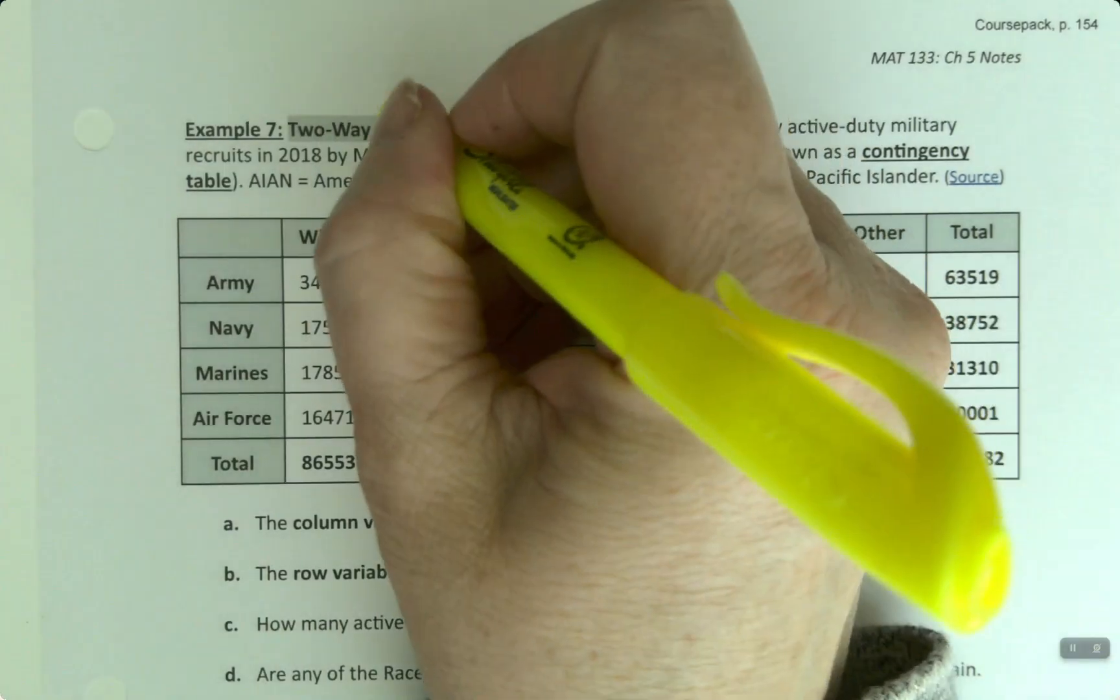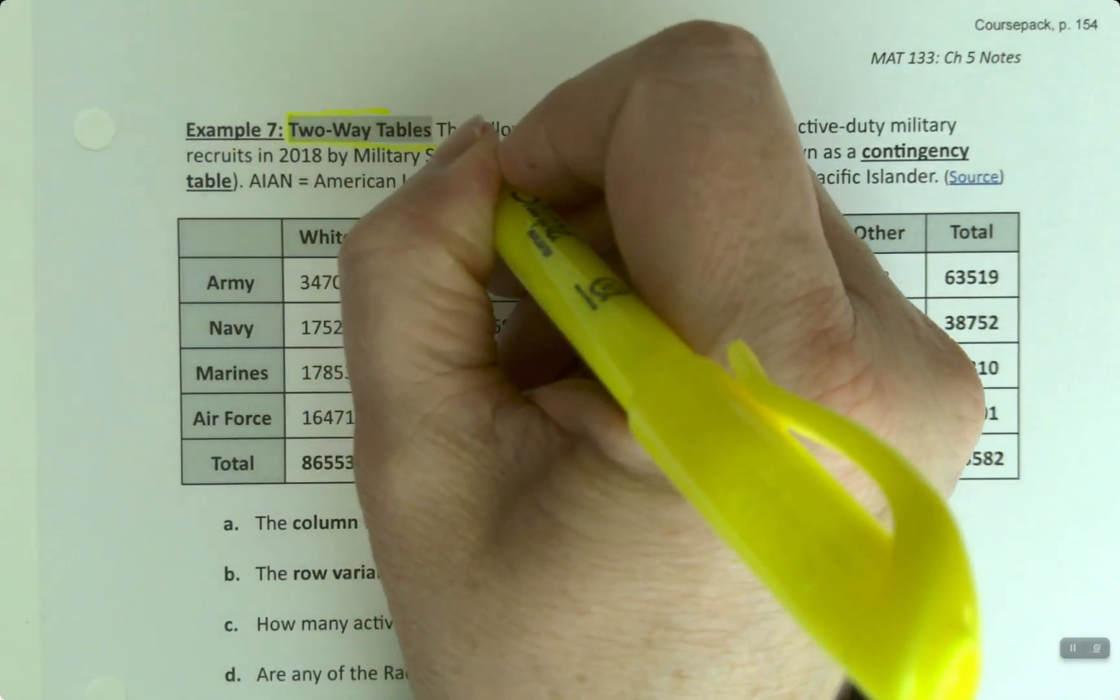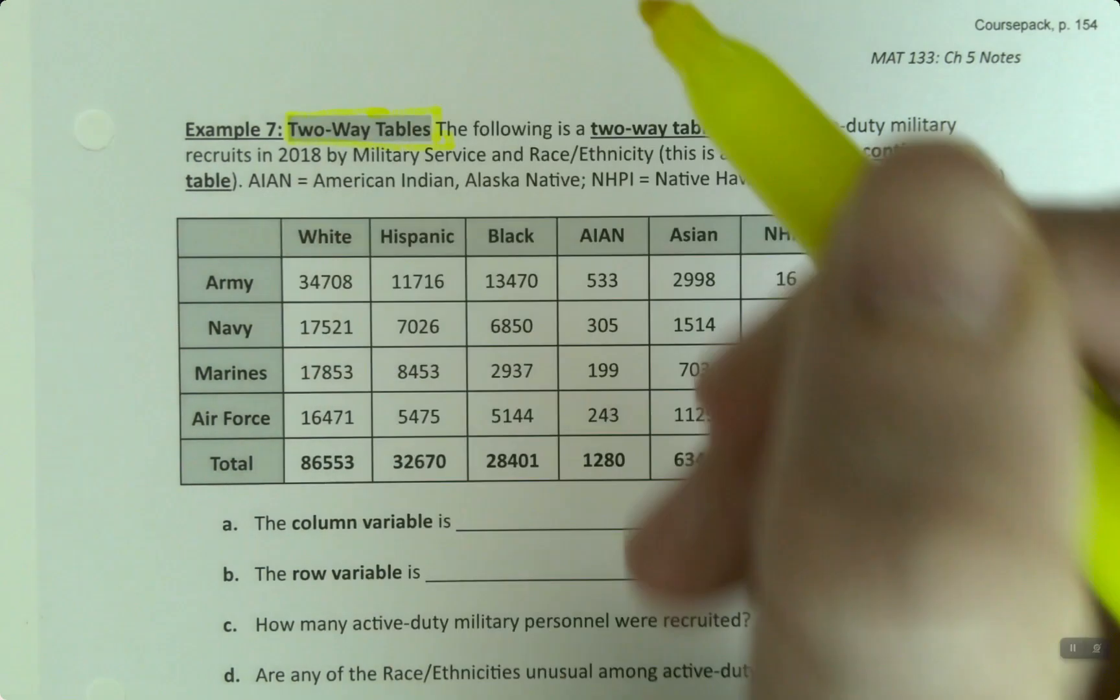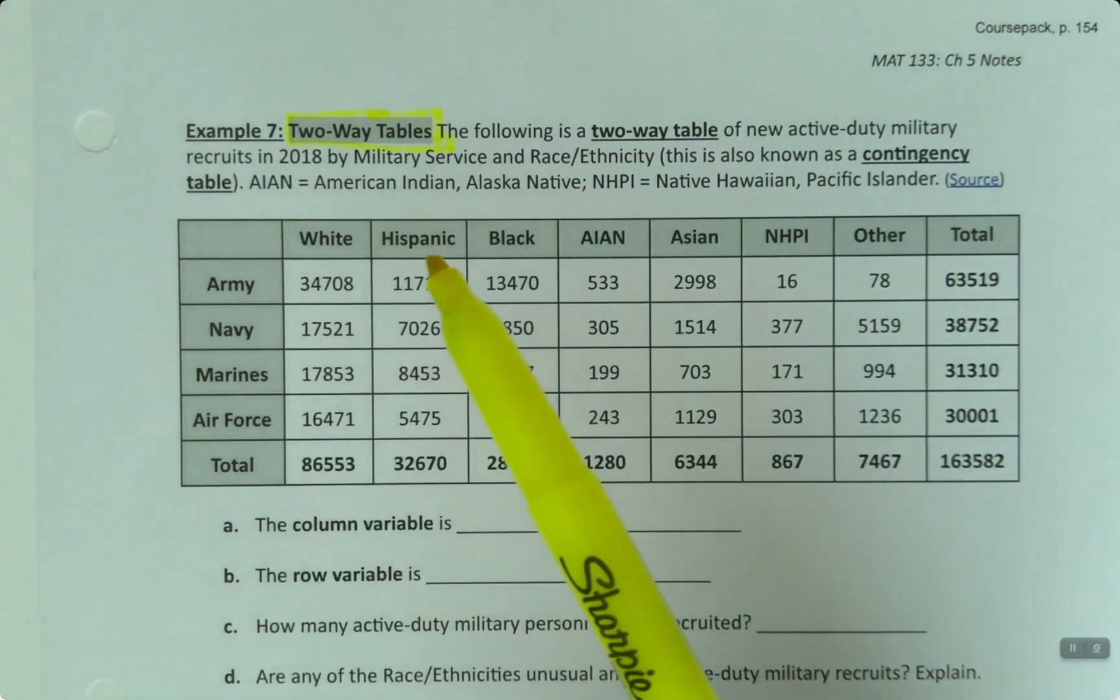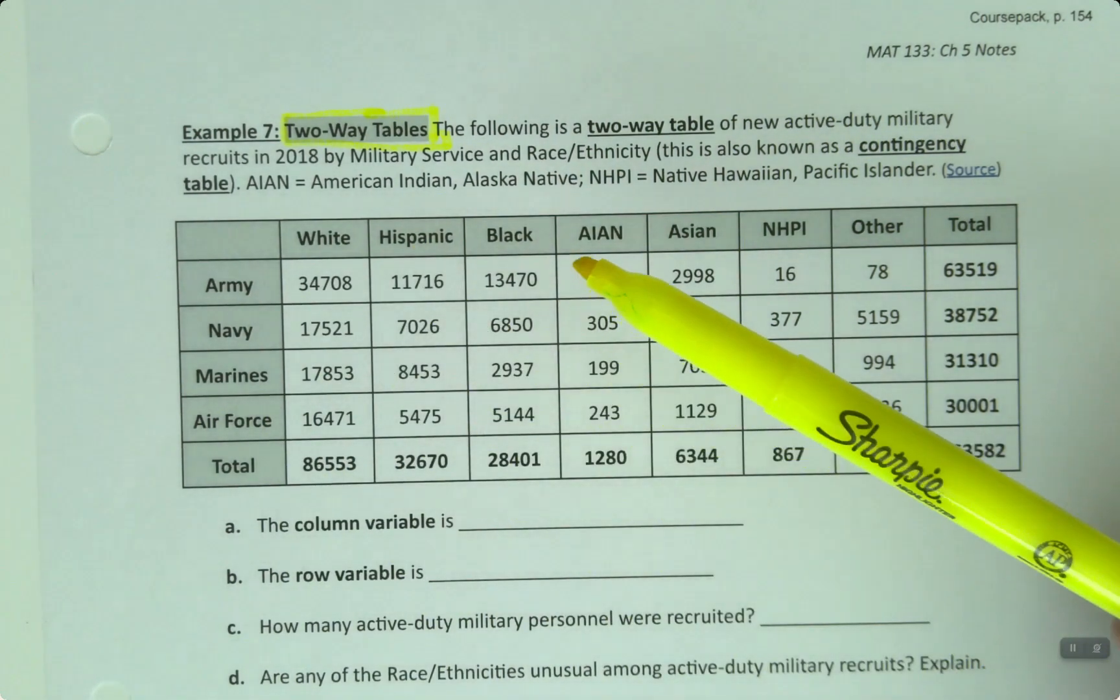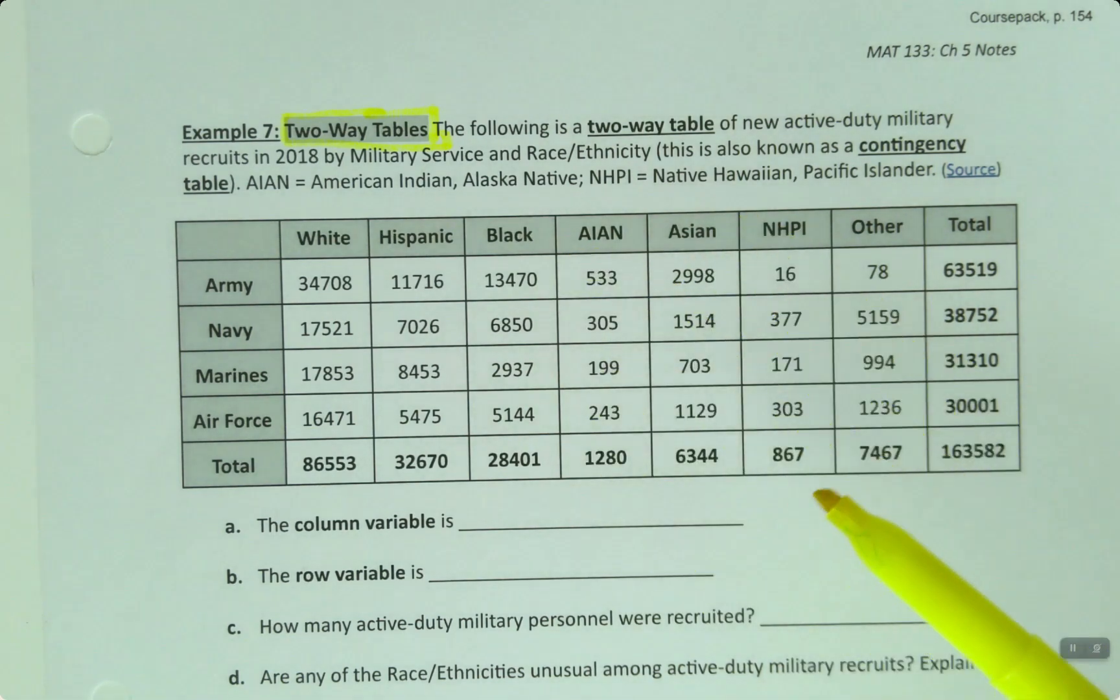So now we want to put everything we've learned from Chapter 5 so far into a big example that also overlaps with statistics a bit. And this is a two-way table example. So it's a two-way table because it has two directions. It has columns, which are the vertical sections, and rows, which are the horizontal sections. This is also known as a contingency table.